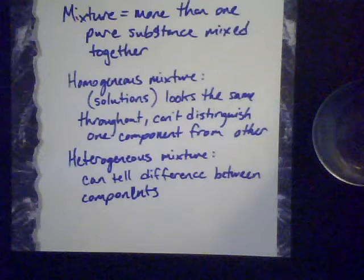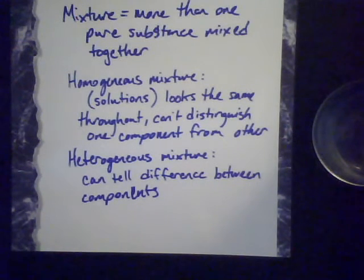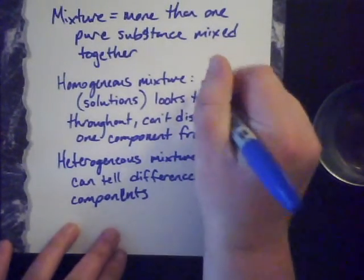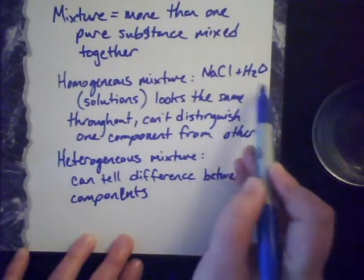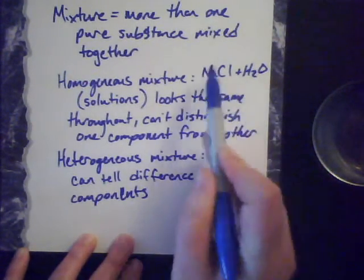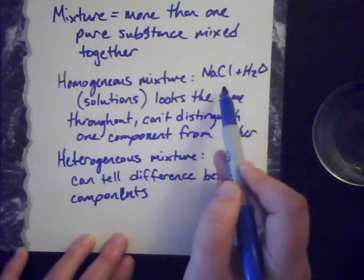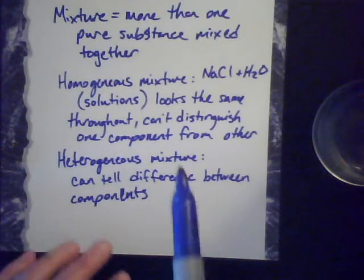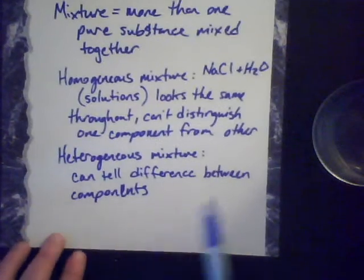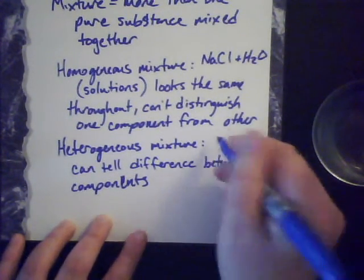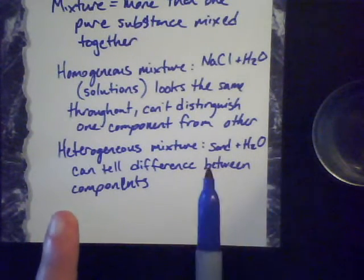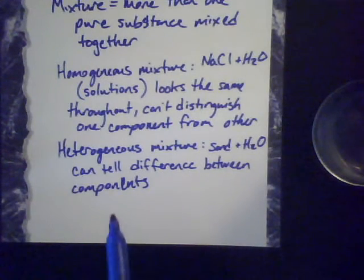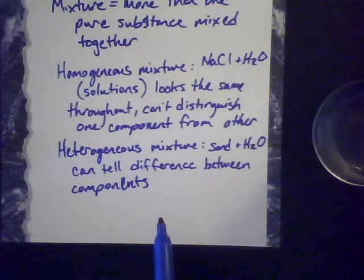Homogeneous mixtures are much more common in solutions in the lab — more often than not it's stuff mixed with water. For example, sodium chloride and water: each one on its own has a chemical formula and a constant composition, making each a pure substance. When you mix them together you can't tell the difference between the salt and the water — you dissolve the salt and you don't see chunks anymore. A heterogeneous mixture would be something like sand and water. If you took sand and put it in water, you could tell the difference between the chunky sand and the liquid water — there's both a physical and a visual difference. So those are two different types of mixtures.